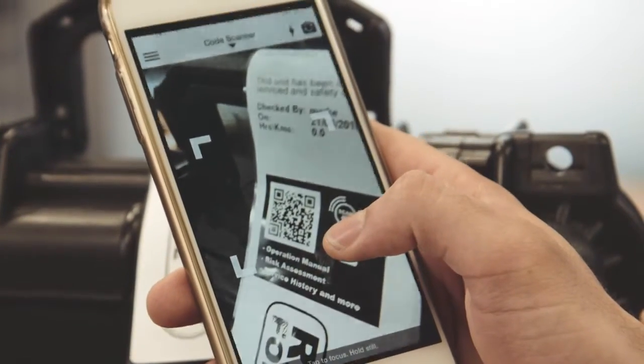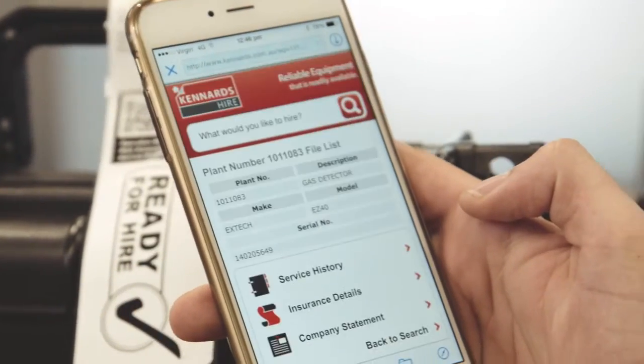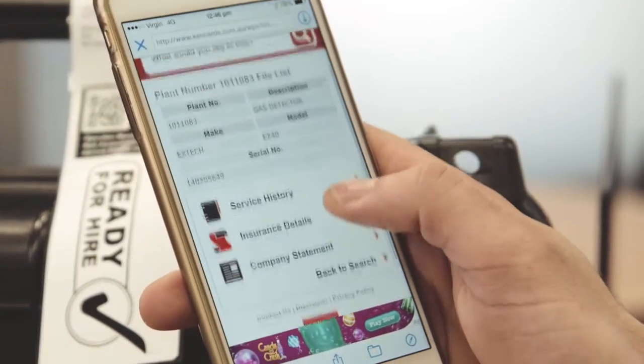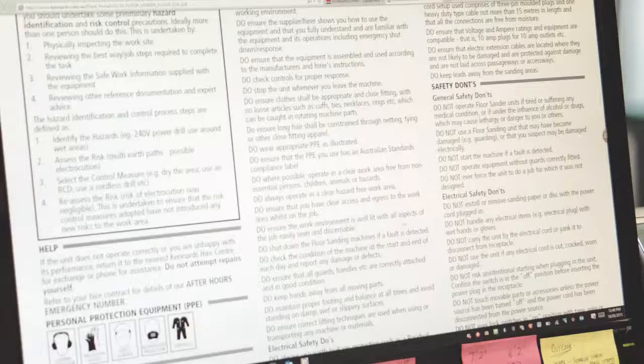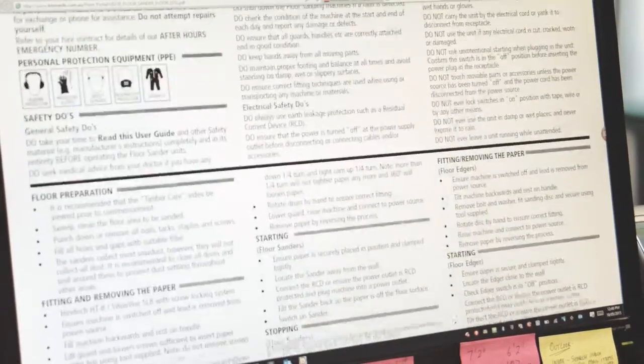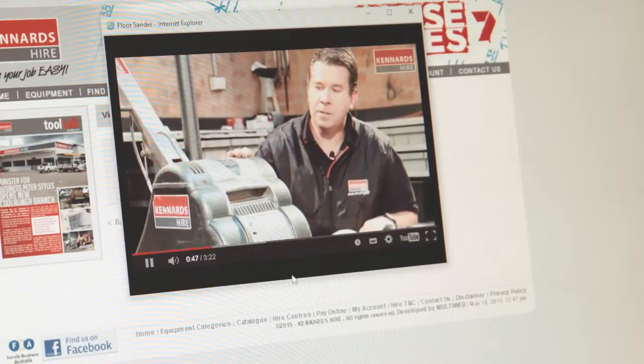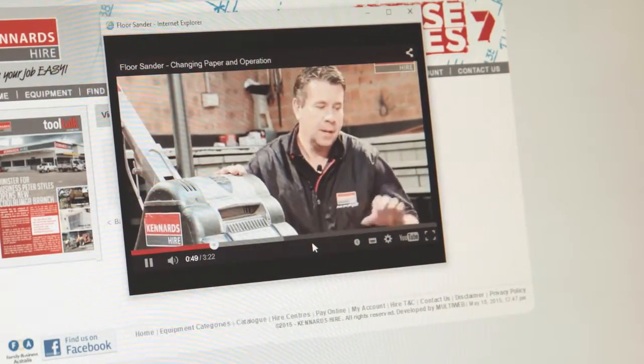Simply put, our customer can pick up their phone, scan the QR code and load straight to the portal website. This will give them access to operator manuals, how-to guides, risk assessments, and also how-to videos.